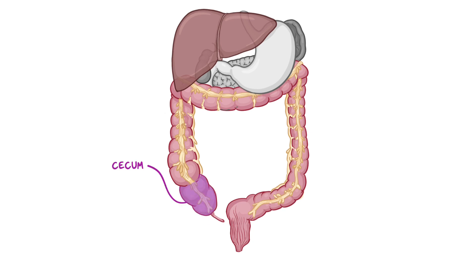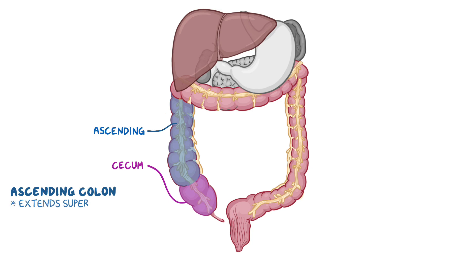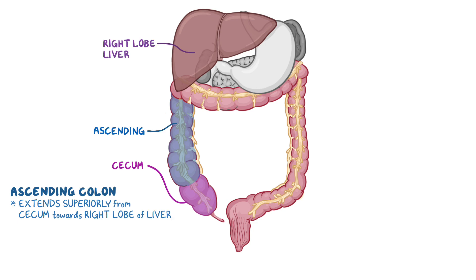The cecum continues as the second part of the large intestine, the ascending colon. The ascending colon extends superiorly from the cecum along the right side of the abdominal cavity towards the right lobe of the liver. Inferior to the liver and below the 9th and 10th ribs, the colon turns to the left, forming the right colic flexure, also called the hepatic flexure.